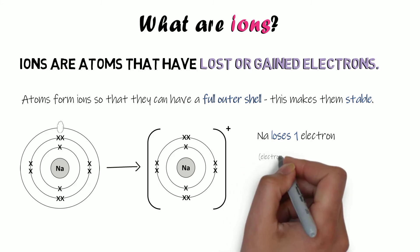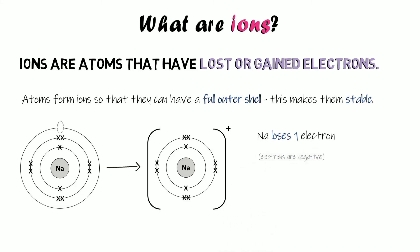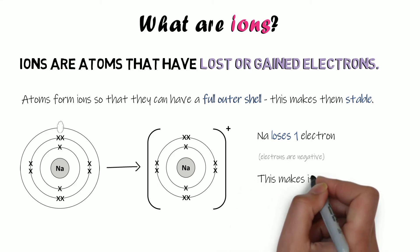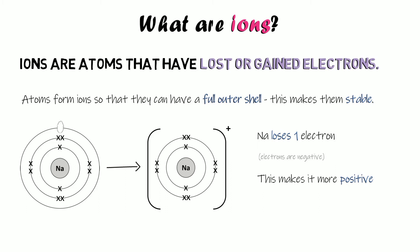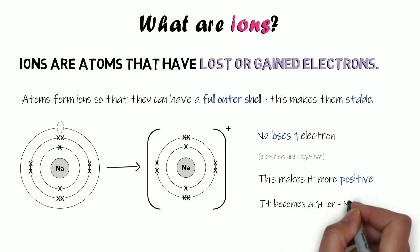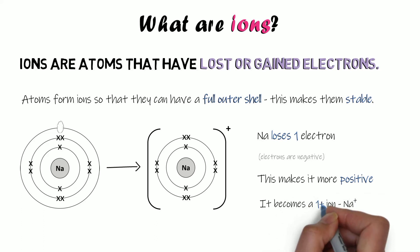If we remember that electrons are negative, if you lose something that's negative, overall you'll become more positive. So because this atom has lost a negative electron, it becomes more positive. Because it's lost one electron, it becomes one positive — a 1+ ion — and the formula for that ion will be Na⁺.